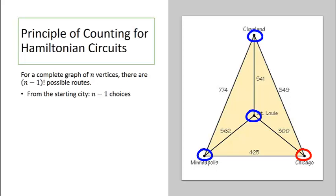Then there are n minus 2 choices for where we'll go next, and so on. So what we end up with is a factorial.